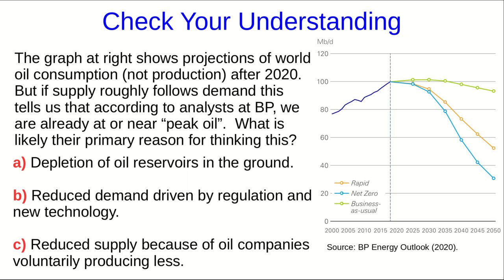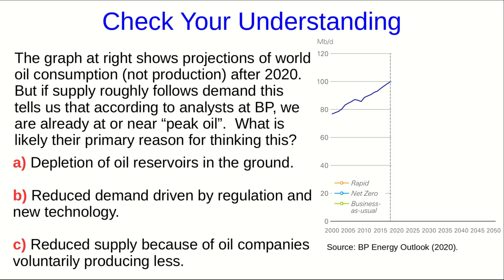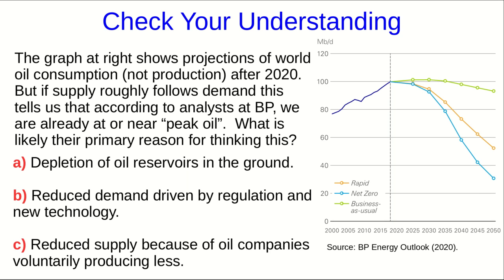Let's check your understanding of these admittedly rather complex issues. This graph is taken from a source from BP and it shows projections of world consumption after 2020. Note that this is showing consumption, not production. But if supply roughly follows demand, then this is saying that people at BP think we're already at or near peak oil. I'm not asking whether you believe these projections — in particular, notice if you look at the past data and project forward, would you come up with curves that look like this? But that aside, what do you suppose the primary reason would be for the analysts at BP to think this? Is this due to depletion of oil reservoirs in the ground, reduced demand driven by various things, or reduced supply because oil companies voluntarily decide to produce less?